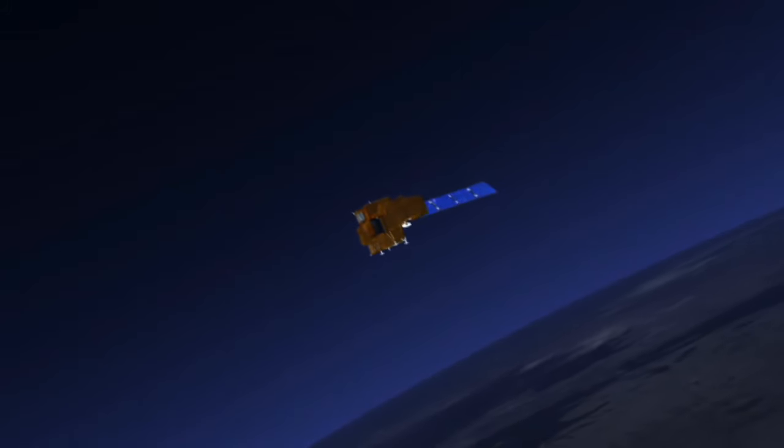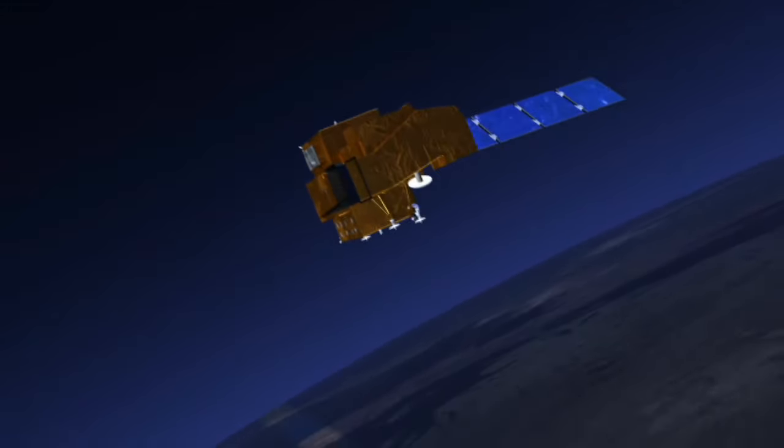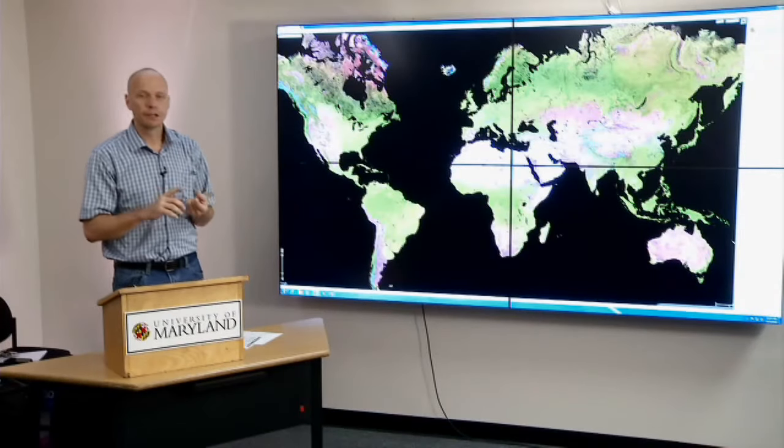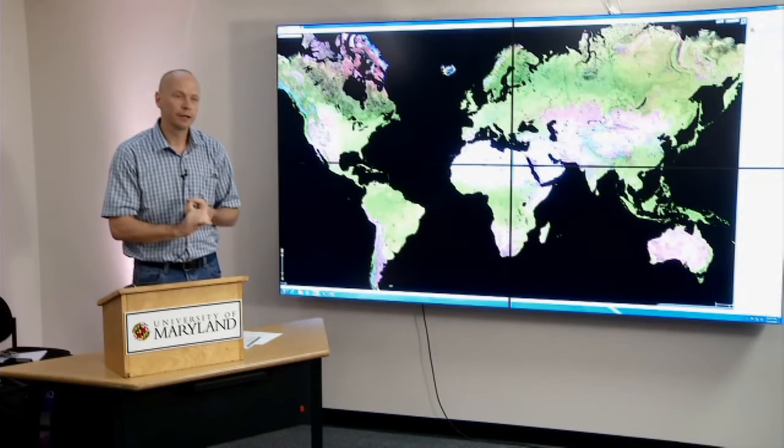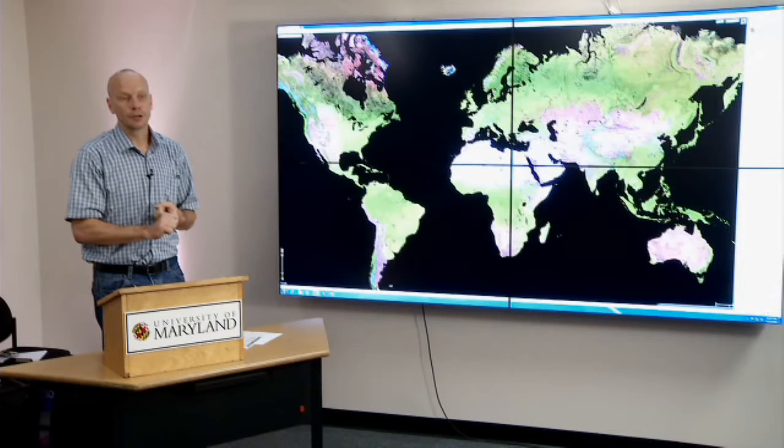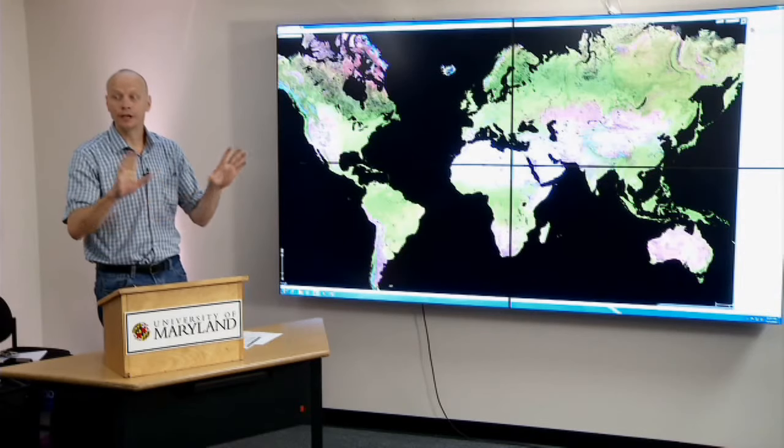Which is 30 meter characterization of the land surface. First is the last Landsat sensor, ETM Plus on Landsat 7 satellite, had a global acquisition strategy. So we had observations everywhere.